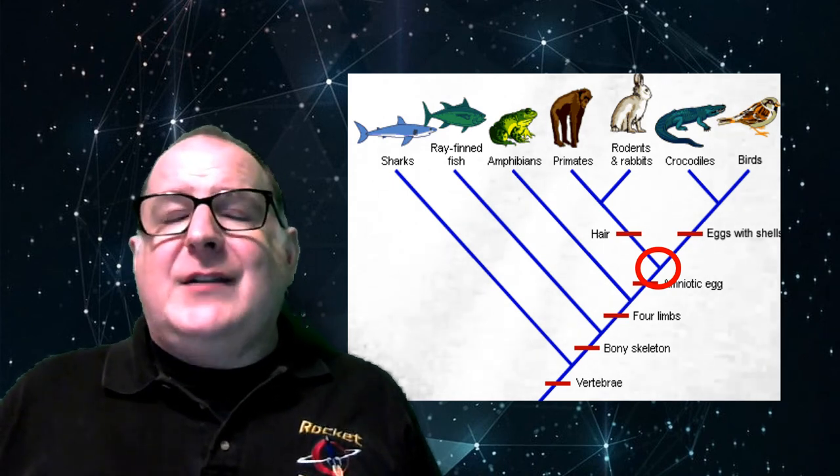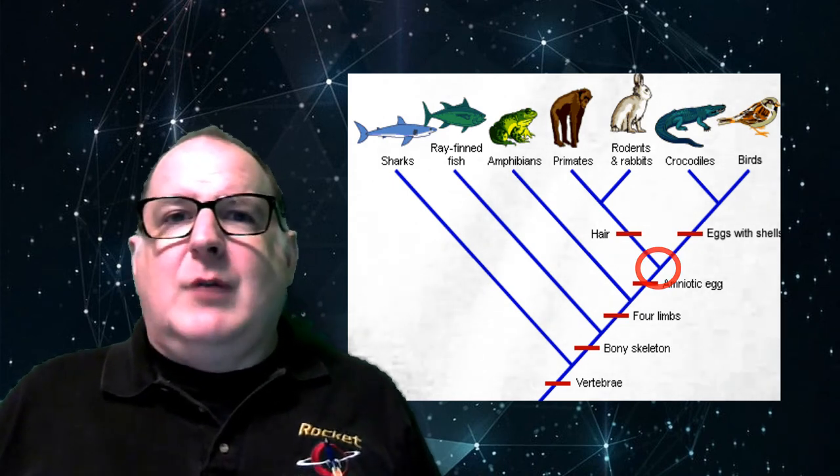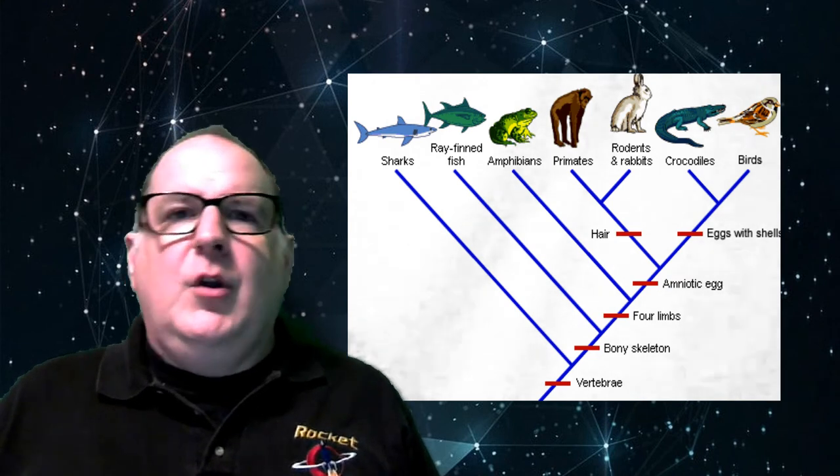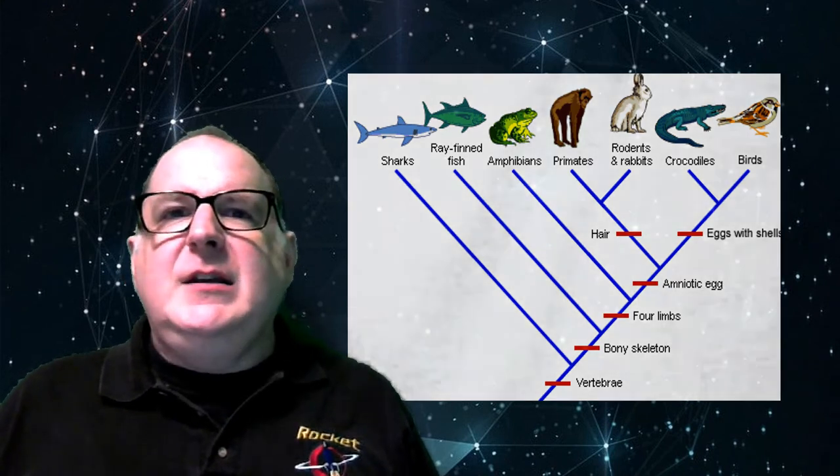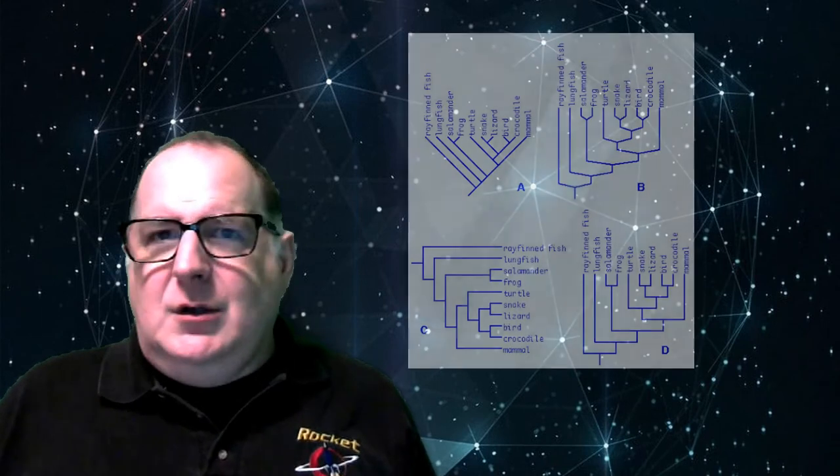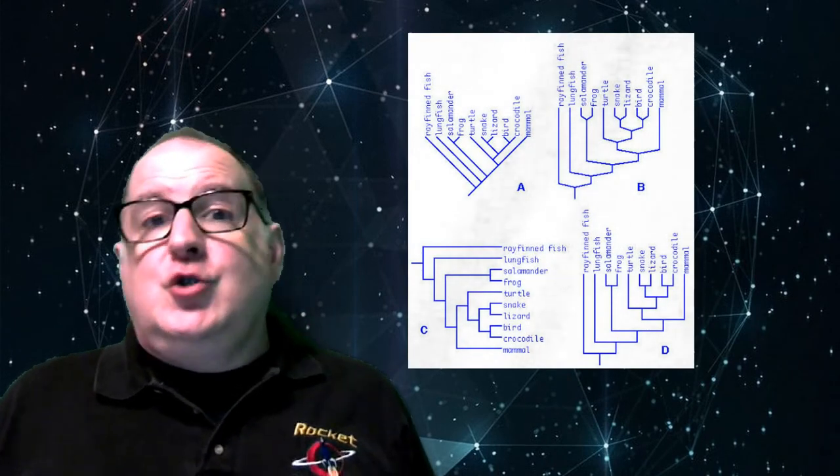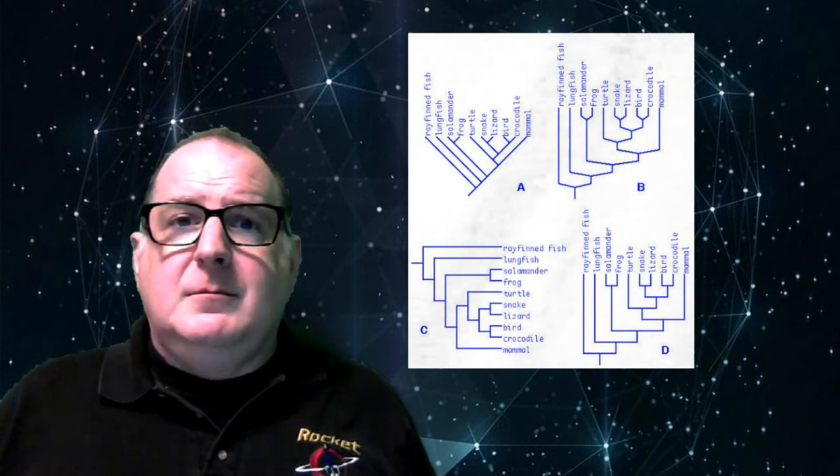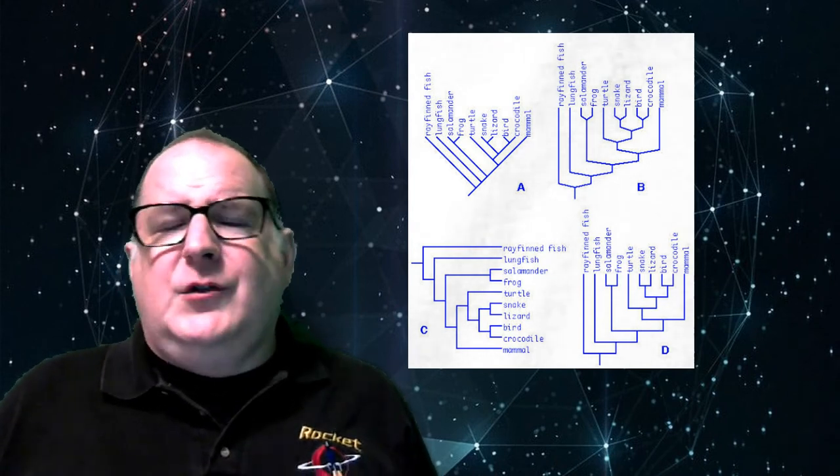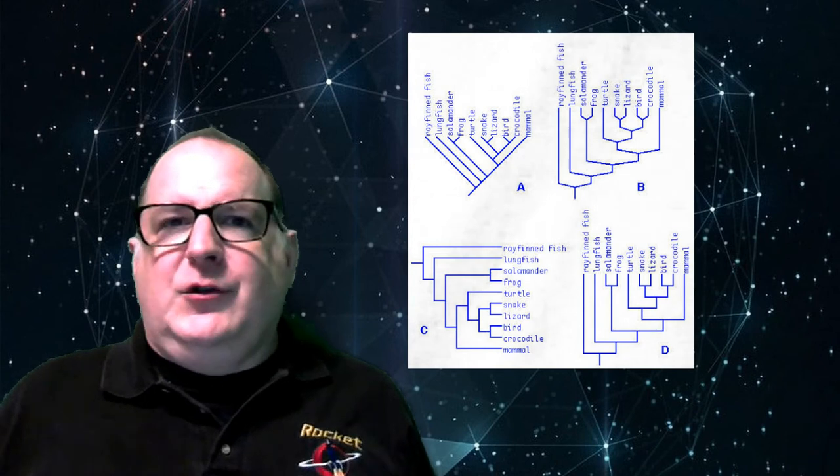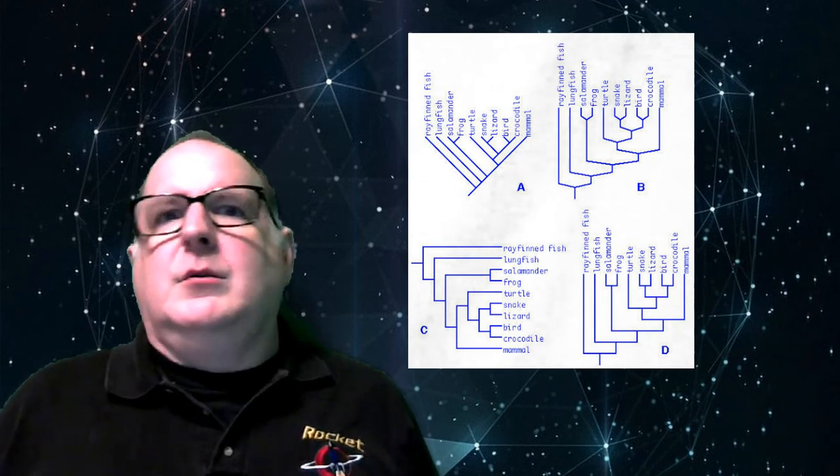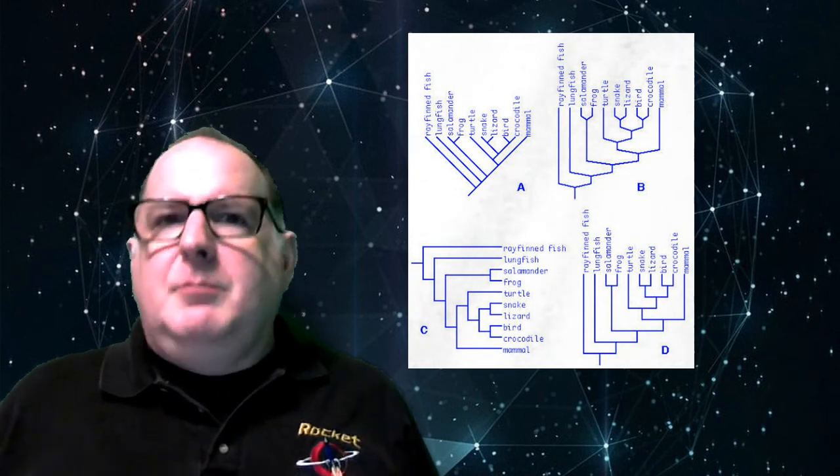So that's how cladograms work. You'll also see these drawn in different ways. Here's an example that shows the same information in four different ways. It's the same thing - it's just whether you're using straight lines or diagonal lines, rotating it or whatever, but it's all still the same.